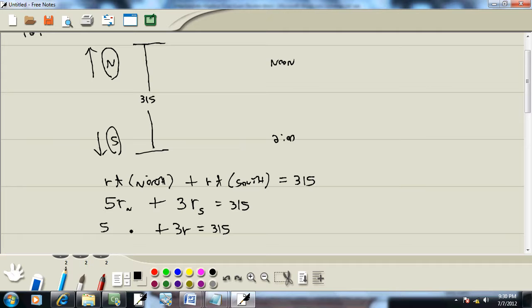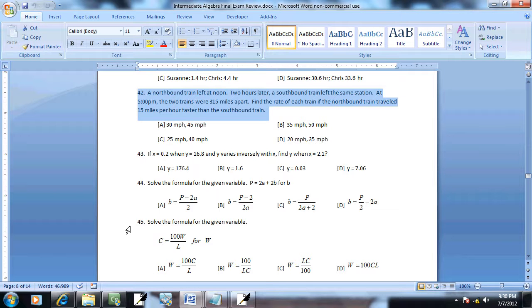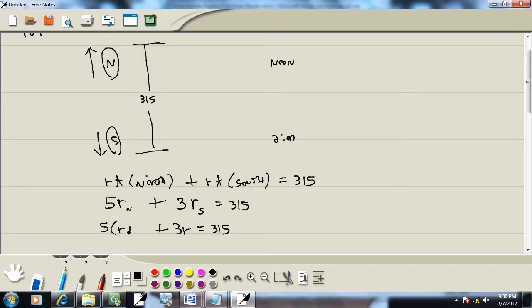So southbound will leave as is, it'll just be r. But for northbound, we said that it's 15 miles per hour faster, which means this will be r plus 15. For example, if southbound was going 10 miles per hour, then this one would be going 25 miles per hour.